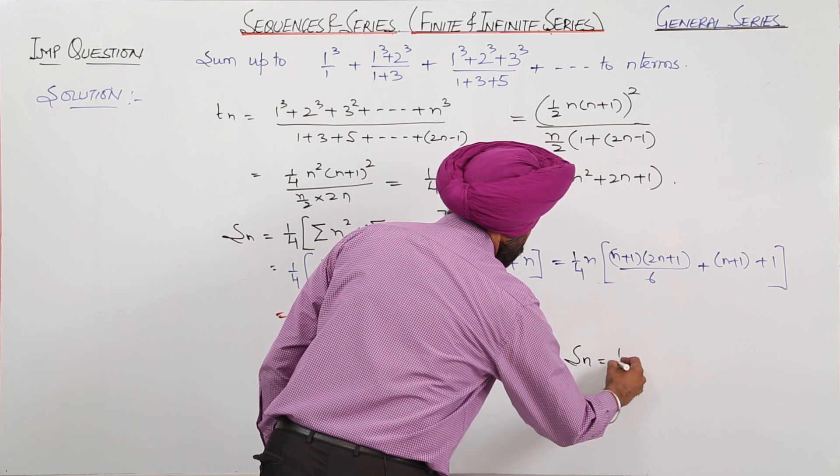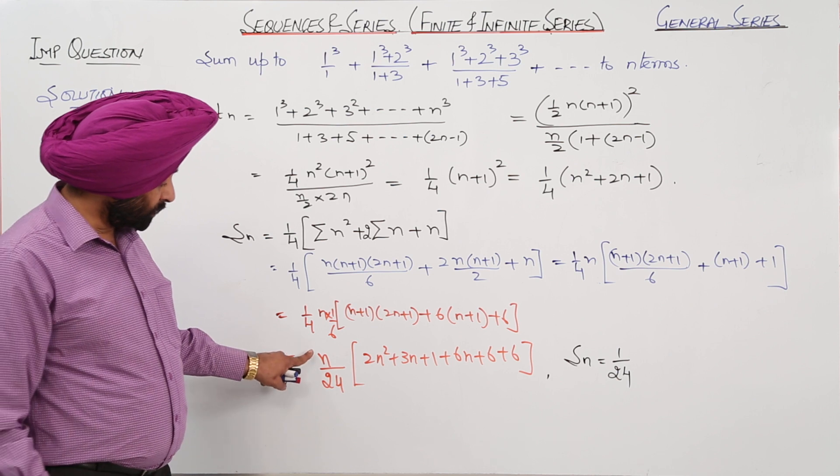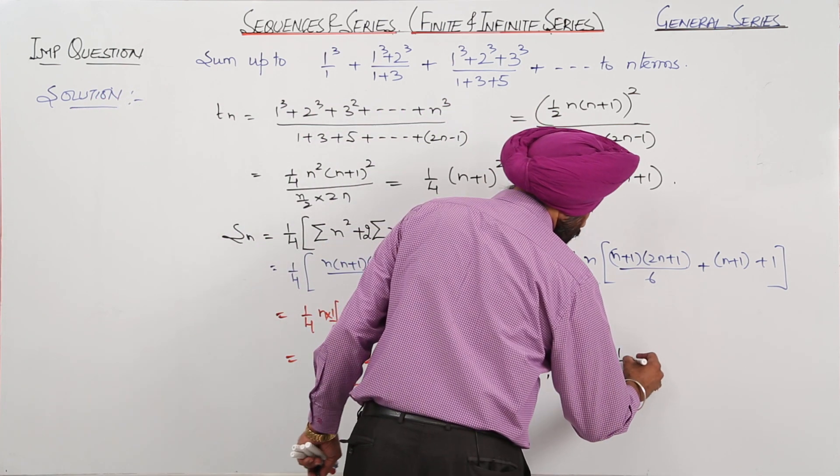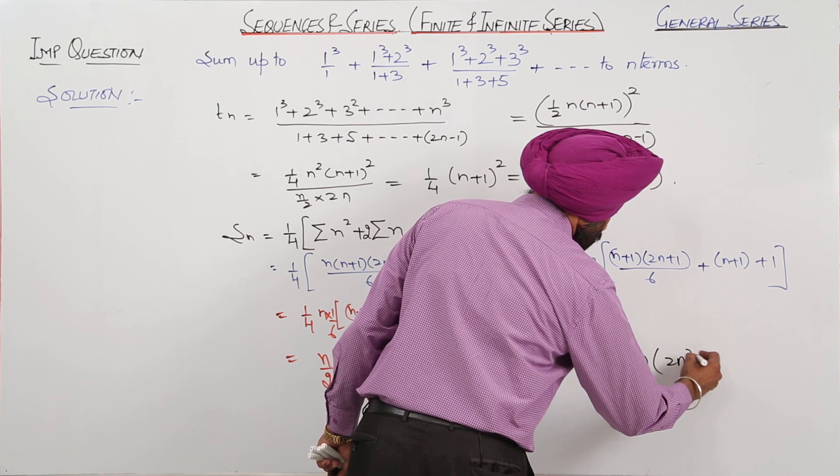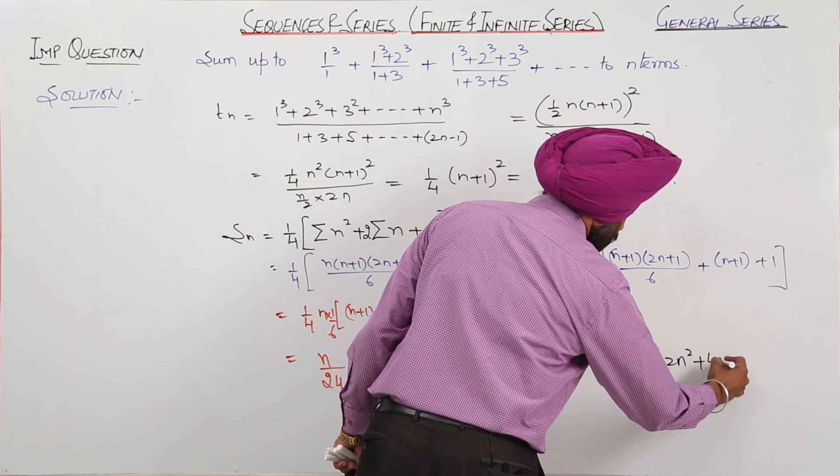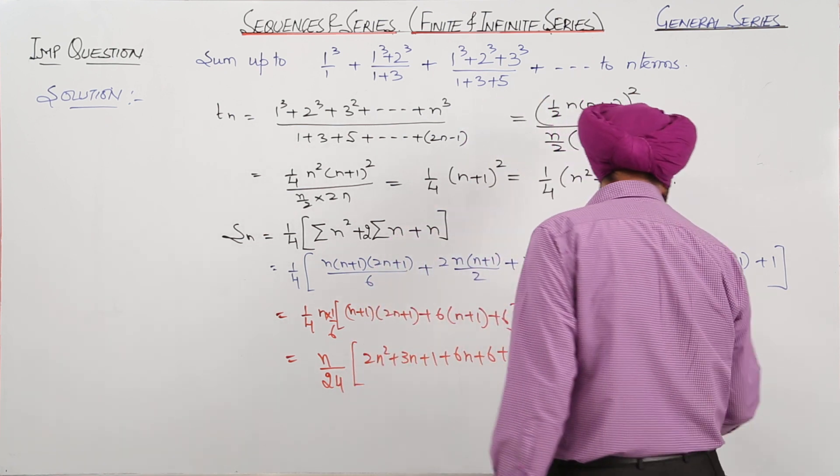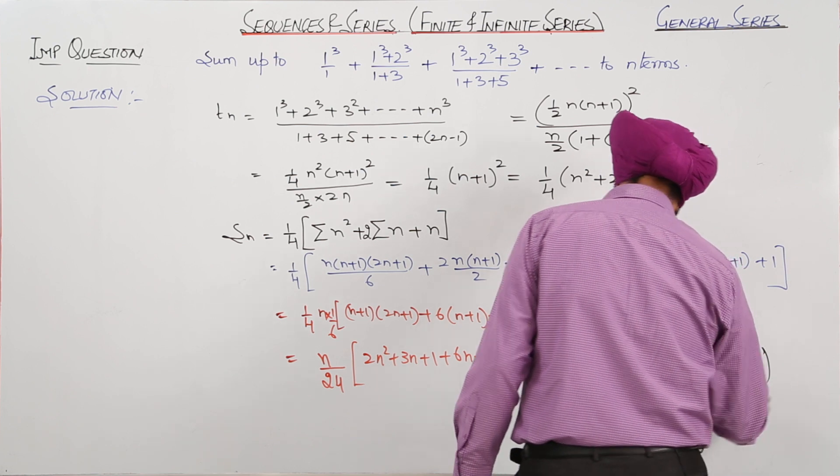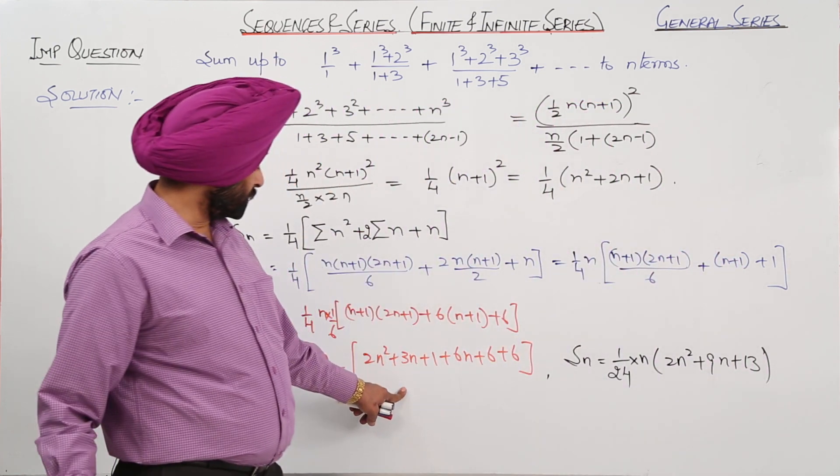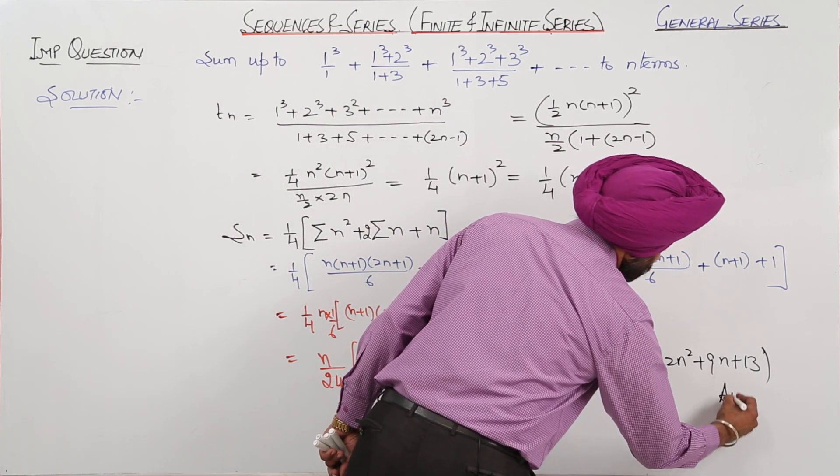Sn is equal to 1/4, this one, 1/4 times n with 2n², 3n and 6n, 9n. So this is equal to n(2n² + 9n + 13)/24, and this is the answer.